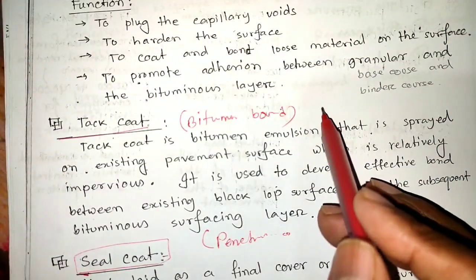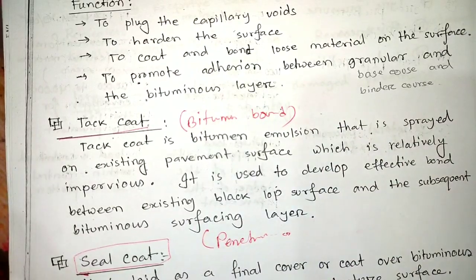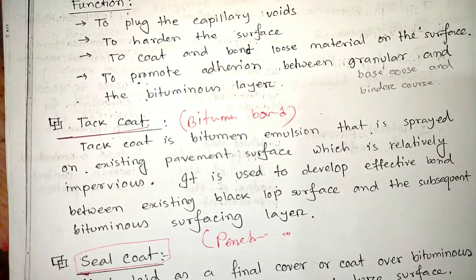Tack coat: When it comes to a bituminous road, if you're applying another bituminous layer on an existing bituminous surface, this coat is called a tack coat.